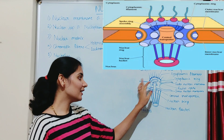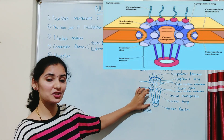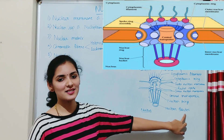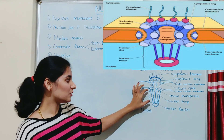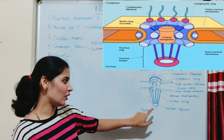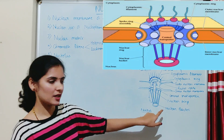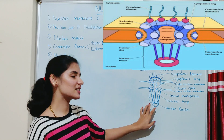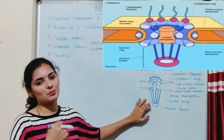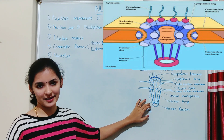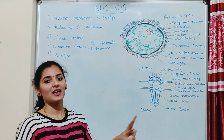The nuclear pore also consists of a structure known as the nuclear basket, located towards the nucleus. The nuclear basket is made up of a ring and eight filaments, and plays a very important role in the transport of RNA. That is all about the structure of the nuclear pore.